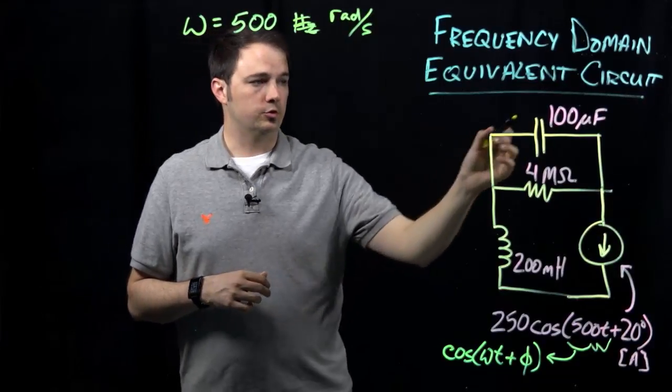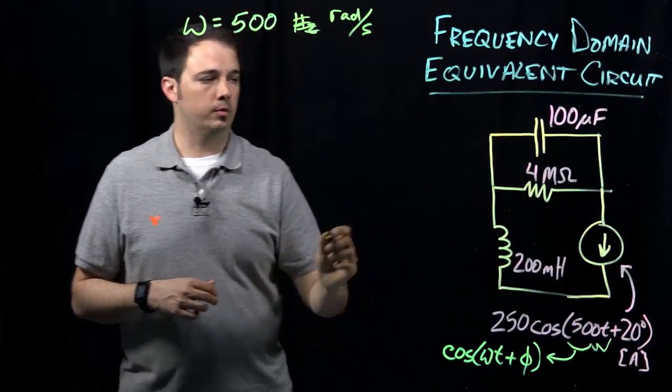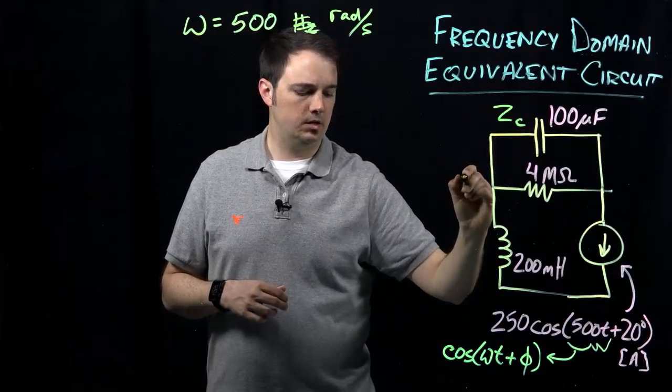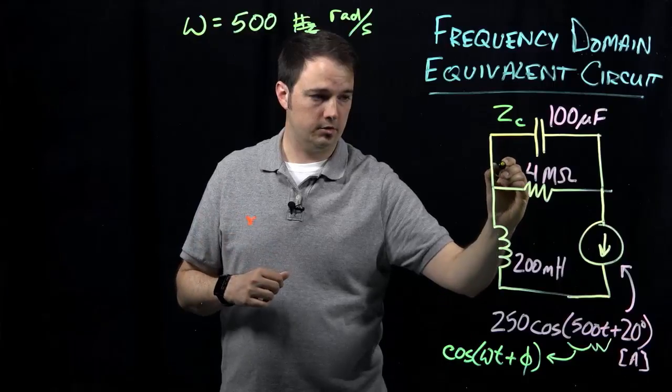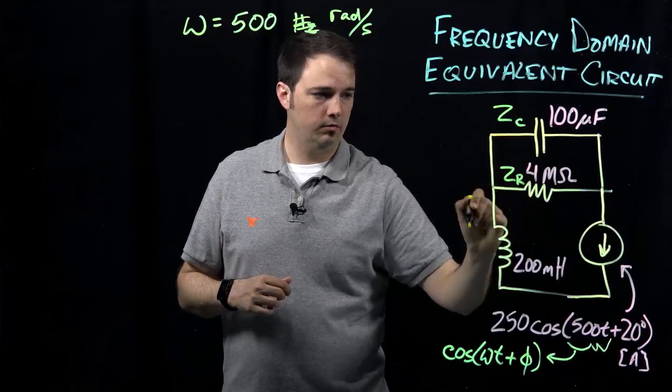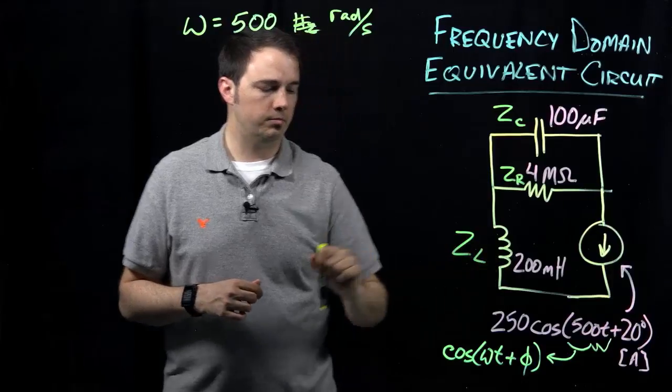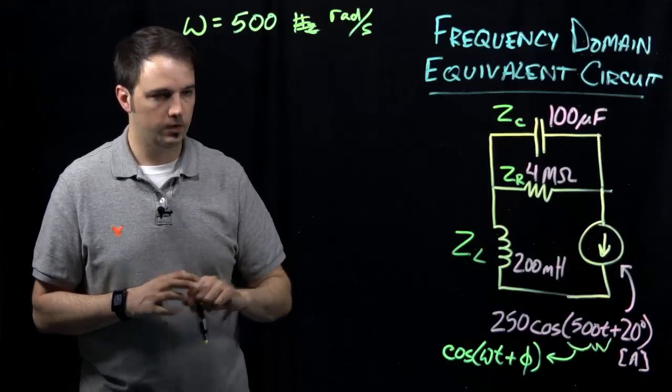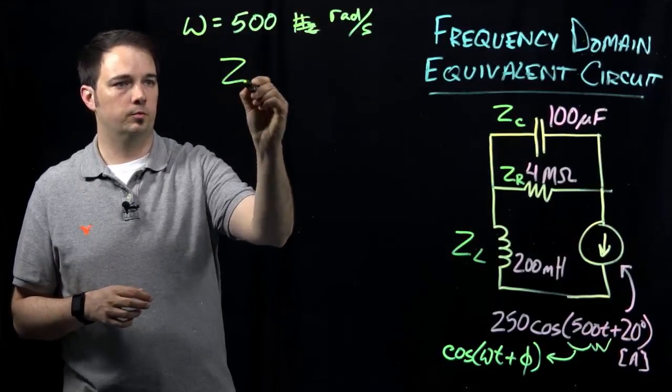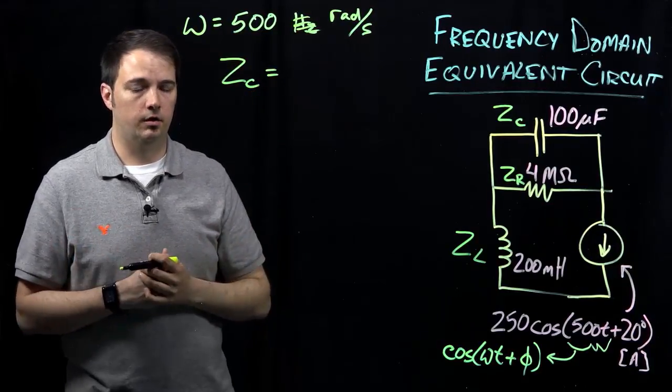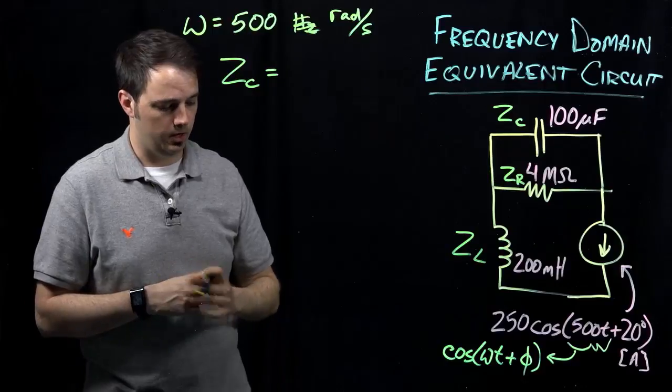So now in order to, again, transition to the frequency domain, we basically want to establish impedances. I'll indicate this as ZC for the capacitor impedance, ZR for the resistor impedance, and ZL for the impedance of my inductor here. So in each of these cases, we're just evaluating using the standard form for the impedance of each of these given elements.